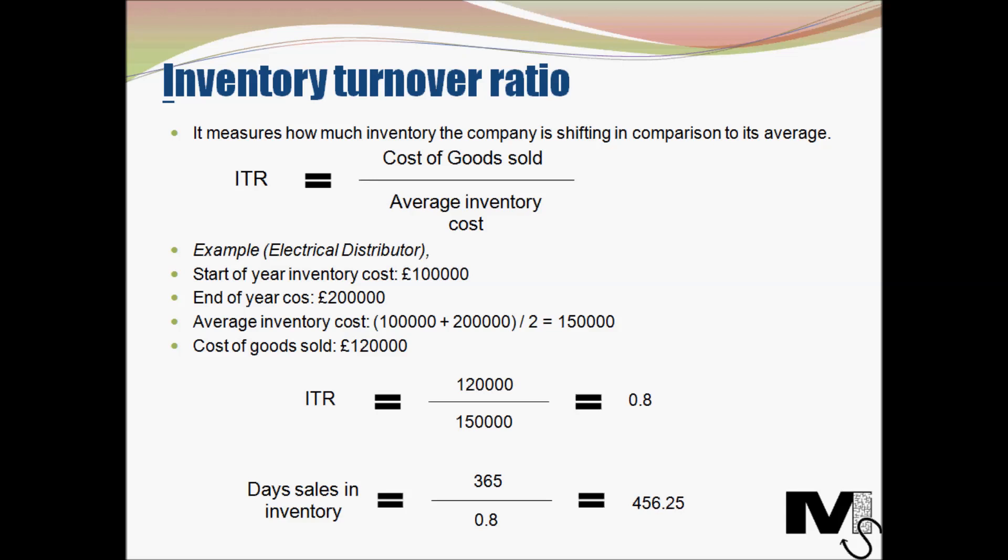A closely associated concept is days sales in inventory. This tells you the number of days it would take for a company to sell all of its inventory. To calculate it, simply divide 365 by the inventory turnover ratio. For the above company, that would be 365 divided by 0.8, which equals 456.25 days — the number of days it would take to sell all of its inventory.